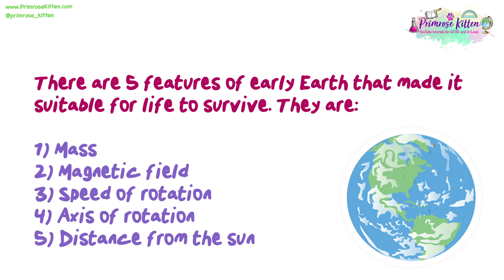There are five features of early earth that made it suitable for life to survive. They are: mass, magnetic field, speed of rotation, axis of rotation, and distance from the sun.